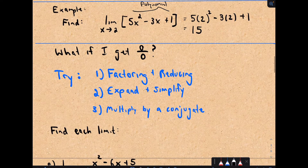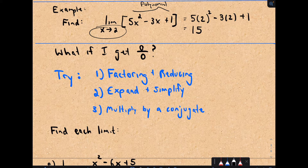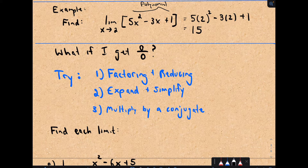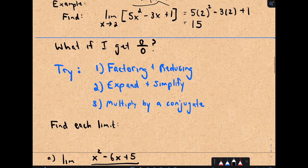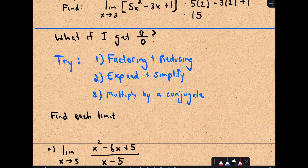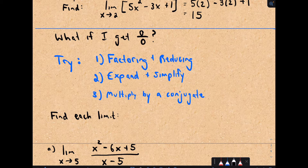Very often when you're first doing limits in a calculus course, even if it's not a polynomial, the first thing I always do is just plug in that value. No matter what function it is, that's the very first thing I do. Very often when you plug that number in, you'll get 0 over 0. That doesn't mean the limit doesn't exist — it just means you have to try something else. Some common things that work: factoring and reducing, expanding and simplifying, and if you have square roots, multiply by a conjugate.